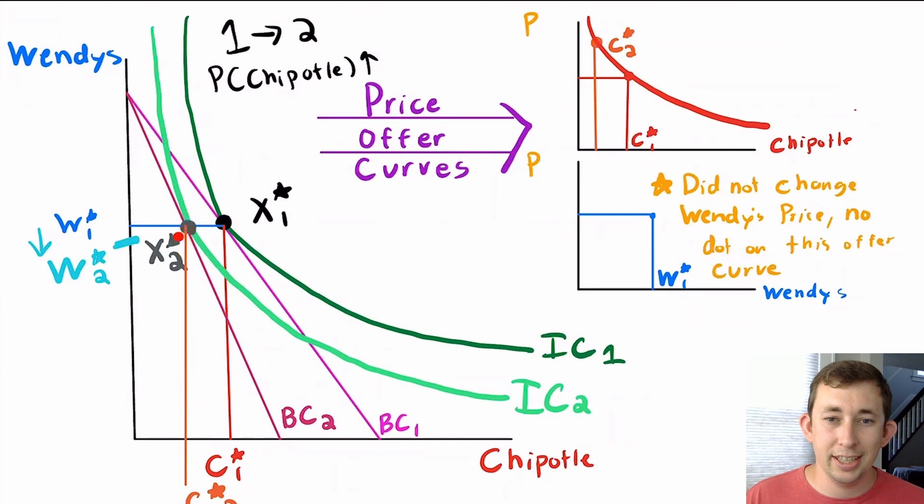We notice that in the second preferred bundle after we've increased the price of Chipotle, we're buying less Chipotle and also less Wendy's. Now, how are we going to turn this into a price offer curve?